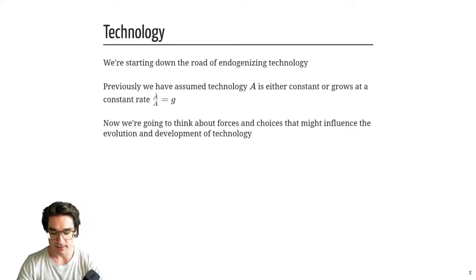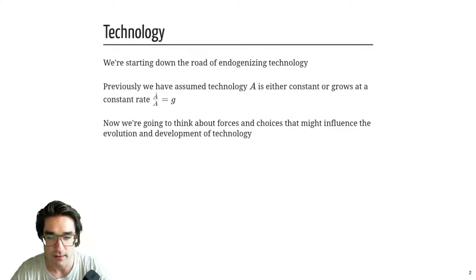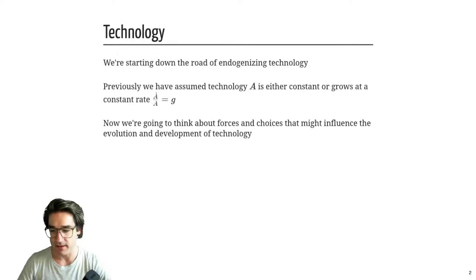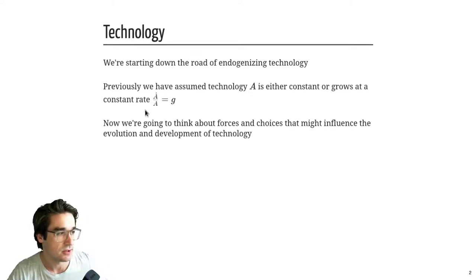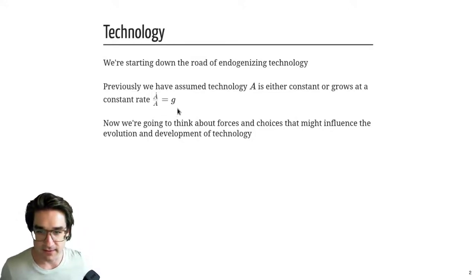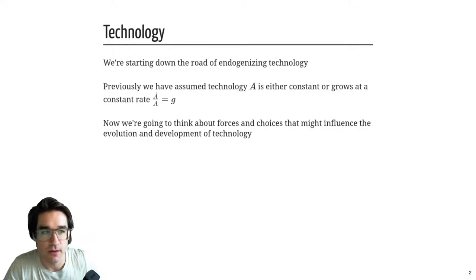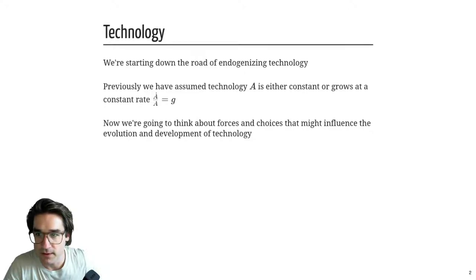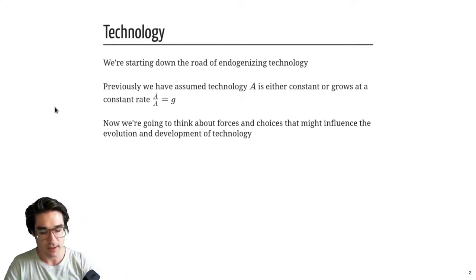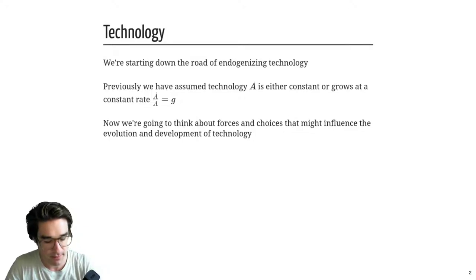Essentially what we're doing is endogenizing technology. Before, in the Solow model, we had a production function Y = K^α · AL^(1-α), where A was technology, and we would just assume that A was growing at some constant exogenous rate G. But we know technology doesn't just grow on its own — it improves because of the incremental efforts of various parties. Those are choices that take resources, and there are tradeoffs between today and the future.